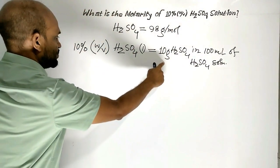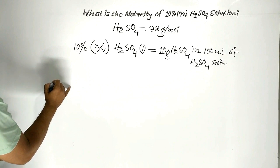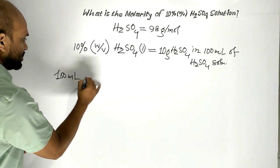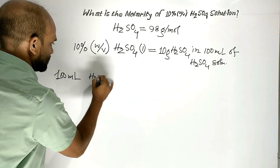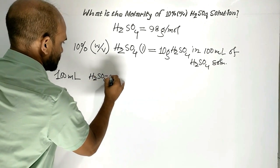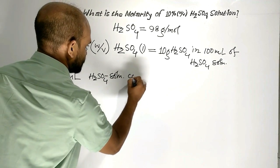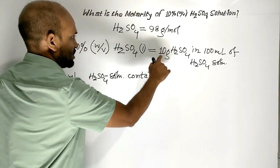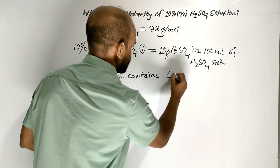It means we can write: 100 milliliters of sulfuric acid solution contains 10 grams of sulfuric acid.